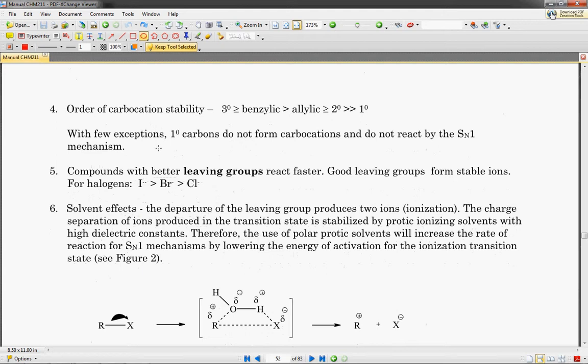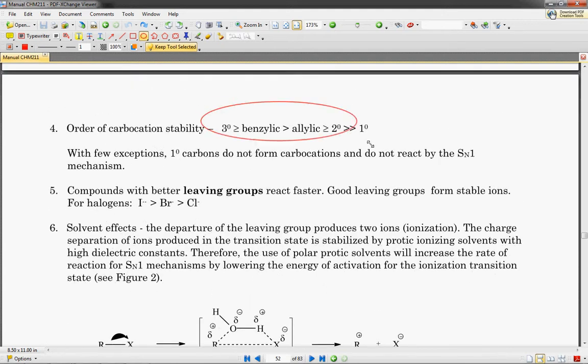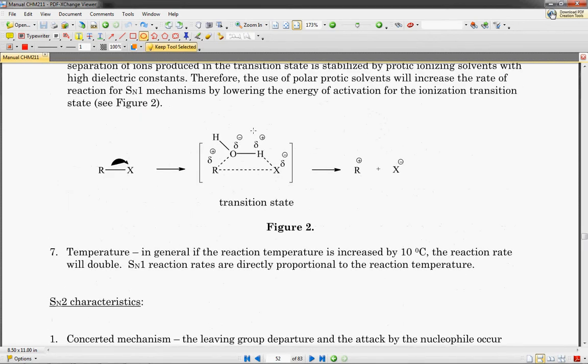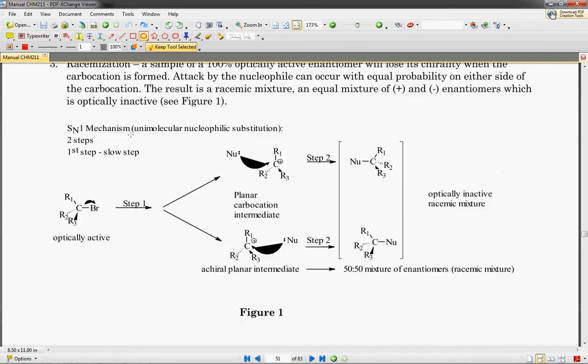This is all talking about SN1 reactions. Tertiary is more stable than a primary, and so on and so forth. An SN1 mechanism will have a first slow step. The first slow step is talked about right here.